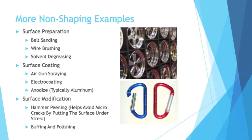Then we have surface coating, usually a final step in producing a product. There is air gun spraying, and there's electro coating — chrome is a very popular way to electro coat something, so a lot of chrome parts like chrome wheels are made using electro coating. Then you have anodizing, which is similar to electro coating but is typically done with aluminum; carabiners, for example, are often anodized.